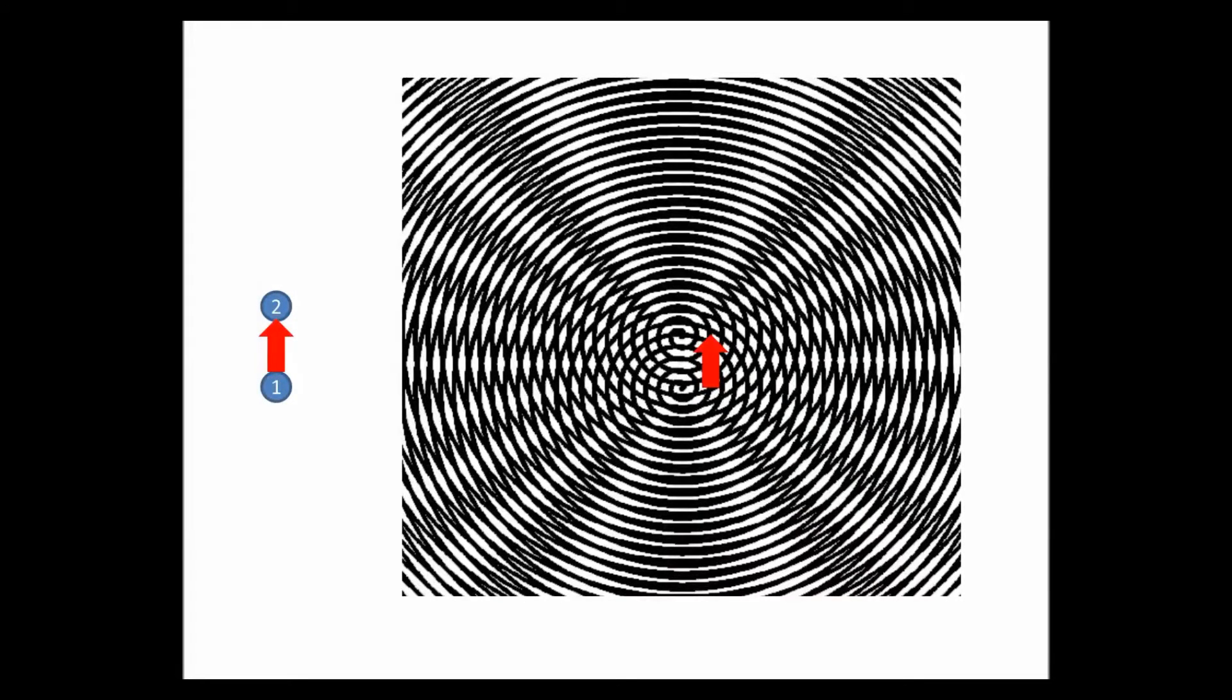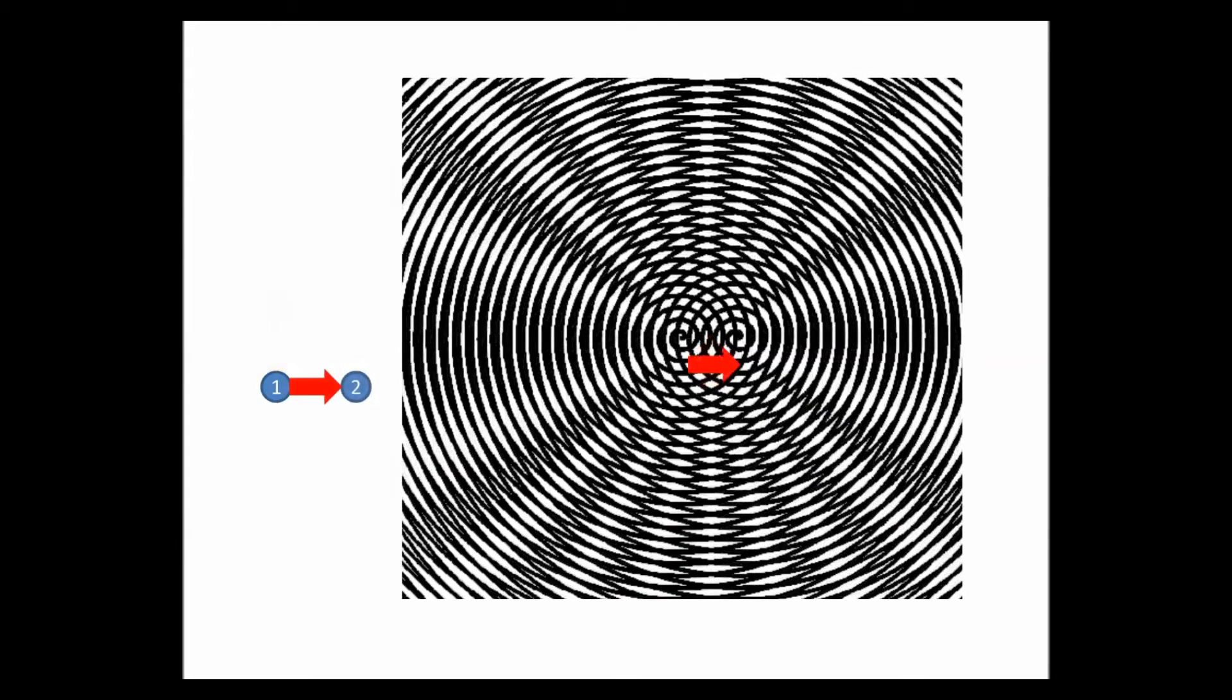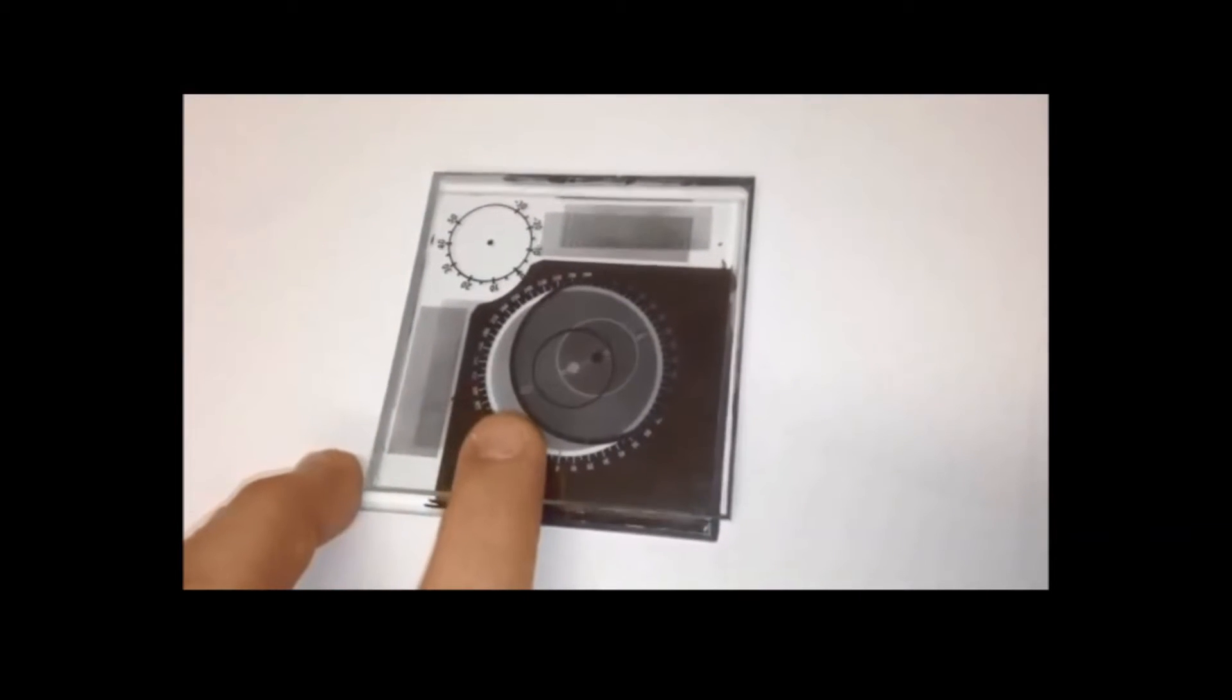The basic idea is quite simple: you have two copies of the same pattern and you move one with respect to the other. The fringes that will appear will tell you if the two patterns have moved one with respect to the other vertically, for example, or here in this case, horizontally. The number of fringes tells you how much it has moved.